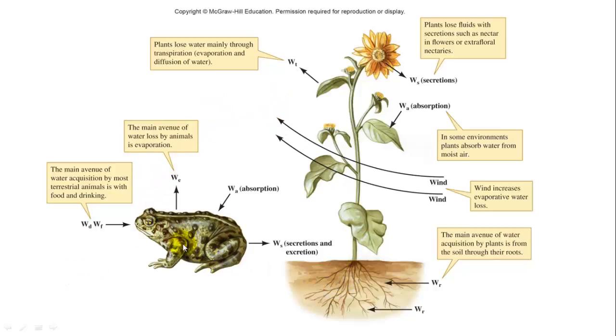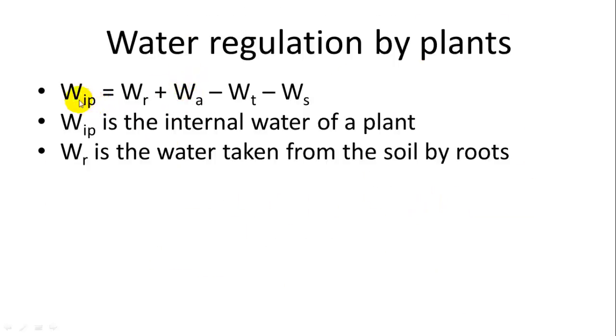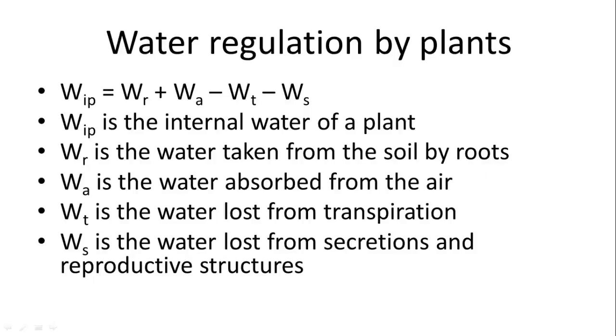So when you look at animals and plants, you have all these things going on: absorption of water from the air, some being lost as evaporation, drink and food being eaten and drunk, and then secretions, which are going to lose water there. In plants, it's a little bit different. So we use the sub-letters IP to represent the internal water of a plant, which is the water taken from the soil by the roots, positive, the water absorbed from the air, positive, minus the water loss from transpiration and the water loss from secretions and reproductive structures. So, for example, some plants will produce a nectar, and a nectar has water within it, and it will lose water that way.